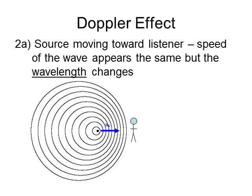Now let's look at the case where the source is moving rather than the observer. When the source moves, the observer still perceives the waves moving at the same speed, but the waves are jammed closer together, so the wavelength itself has changed. If you're standing in front of the moving source, the compressed wavelength means the waves hit you more often, so the frequency appears higher.